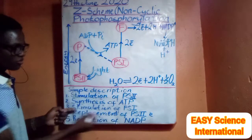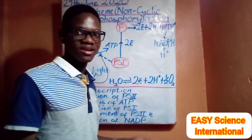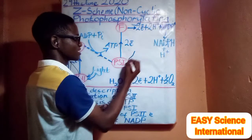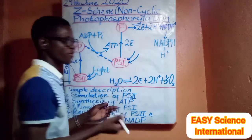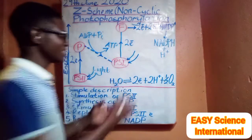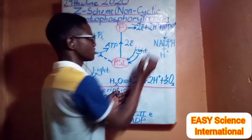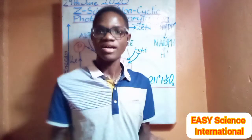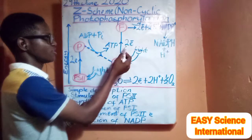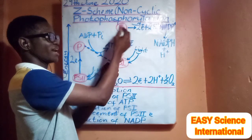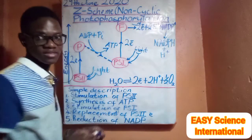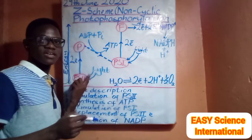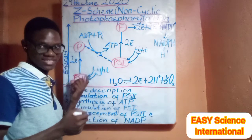Step 3: Stimulation of Photosystem 1. Another photon of light strikes a pigment molecule belonging to Photosystem 1. The electrons in there are excited and promoted to a higher energy level, and eventually emitted. These two electrons are then accepted by another electron acceptor known as Ferredoxin, which now accepts the electrons that were initially belonging to Photosystem 1.